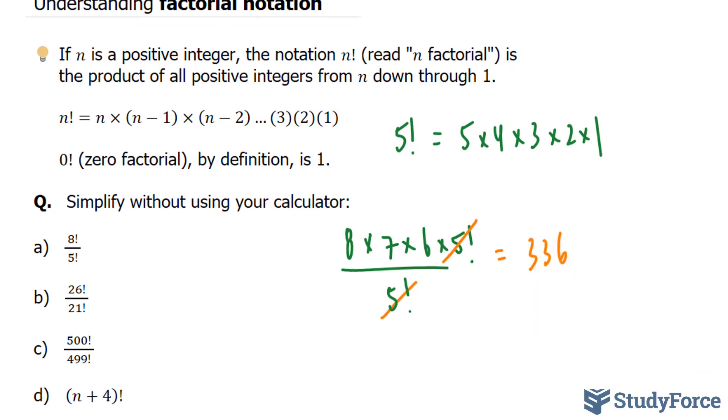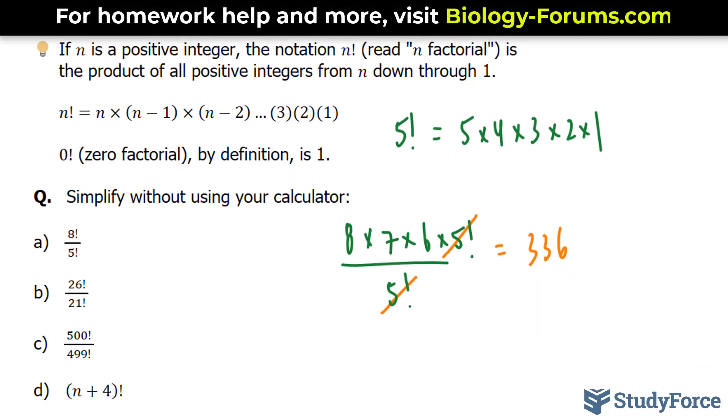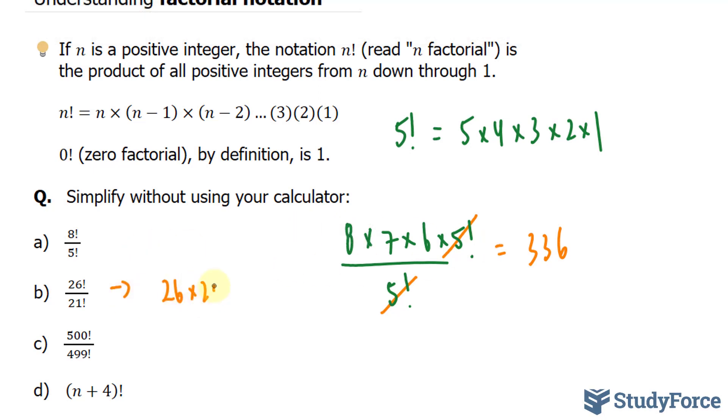Let's move on to B. This time we have 26 factorial over 21. Once again I'll use the same method as before. 26 times 25 times 24, 23, 22.